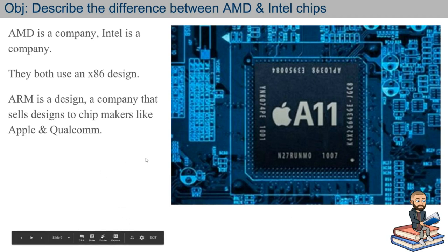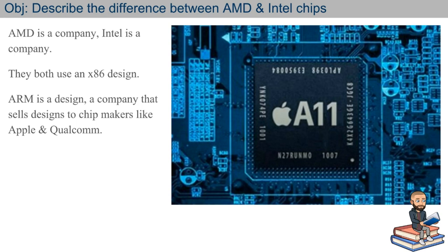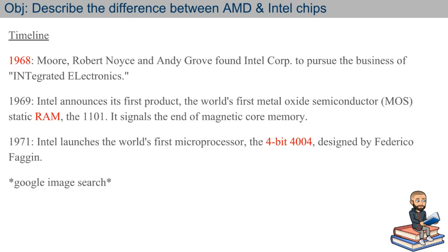Our objective is to describe the difference between AMD and Intel. You know so far that they both make chips — that's a similarity. The key similarity is they both design x86 chips. ARM is also an acronym, but think of ARM as the chip designed for cell phones. So let's walk through a timeline.